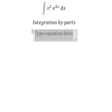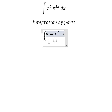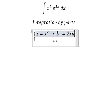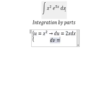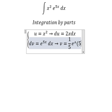I will set u equals x squared. Now we need to take the first derivative for both sides, and we have du equals 2x dx. dv is e to the 5x dx, so the integration of this one gives us v equals 1 over 5 e to the power of 5x.